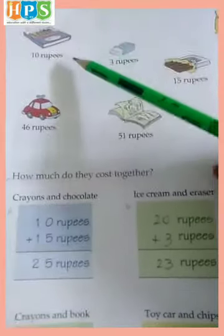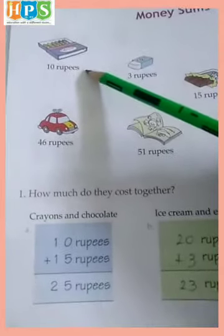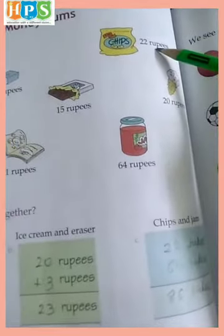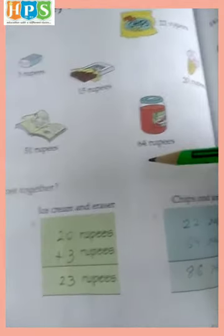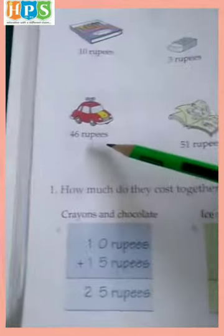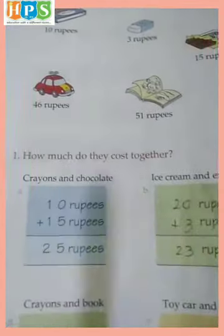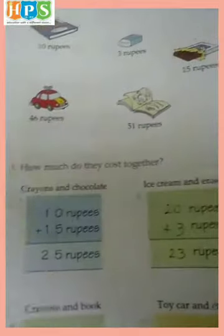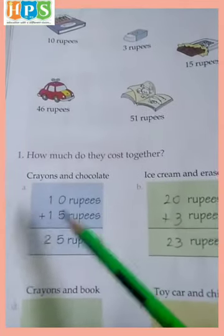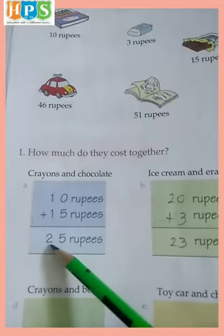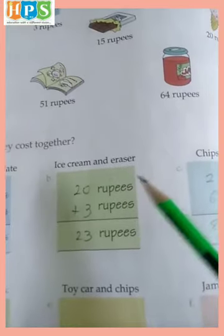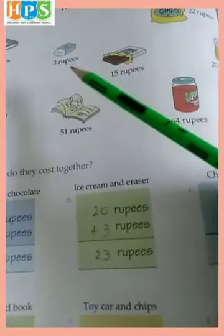Money Sums. Items: Crayons 10 rupees, Eraser 3 rupees, Chocolate 15 rupees, Chips 22 rupees, Ice Cream 20 rupees, Jam 64 rupees, Book 51 rupees, Toy 46 rupees. How many do they cost together? Crayons and Chocolate: Crayons 10 rupees and Chocolate 15 rupees. 10 plus 15: 0 plus 5 equals 5, and 1 plus 1 equals 2, so it means 25 rupees.